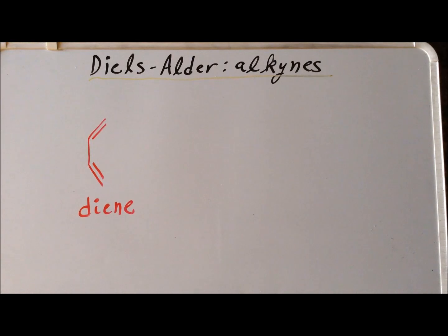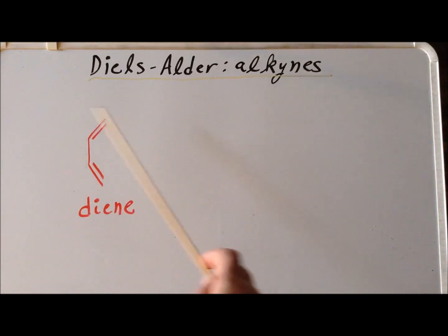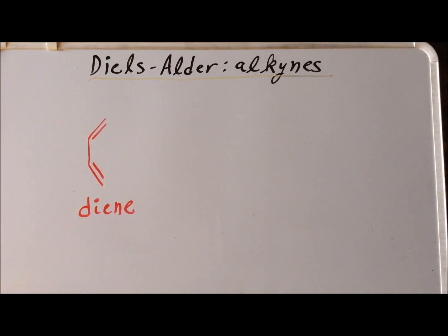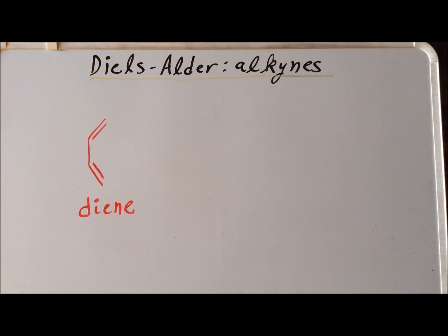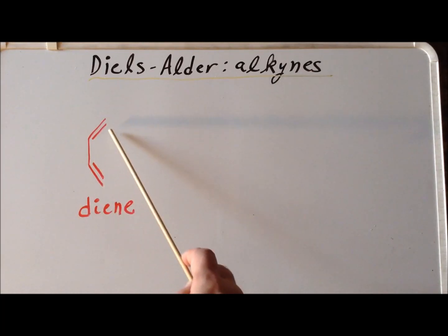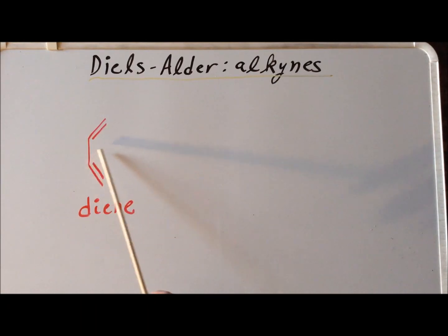The first of the required reactants for the Diels-Alder reaction is a diene. It has to have at least two double bonds and these have to be conjugated. As a result, this is at minimum a 4 pi electron system. Also note that it is necessary for the reaction for both of the double bonds to be on the same side of this single bond — we say that it is in the S-cis configuration.